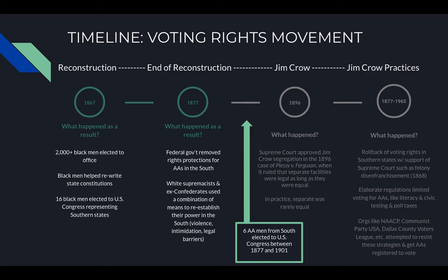We're going to continue with our timeline and go more in depth about what happened as a result of those individuals having the right to vote. In 1867, Reconstruction begins post-Civil War. At this time, Black men were able to vote and run for office, and over 2,000 Black men were elected to public office. Black men were also able to help rewrite state constitutions, and 16 Black men were elected to the United States Congress representing southern states — that's a really big deal.